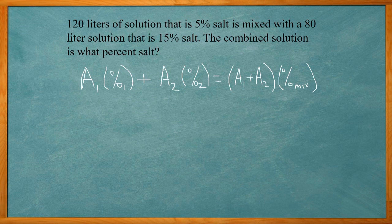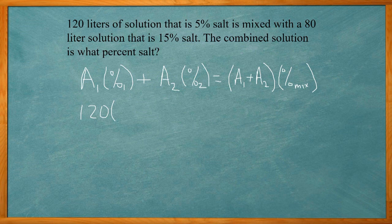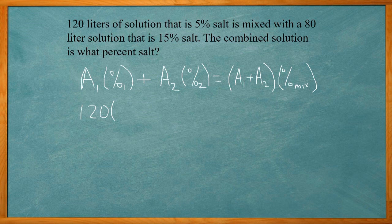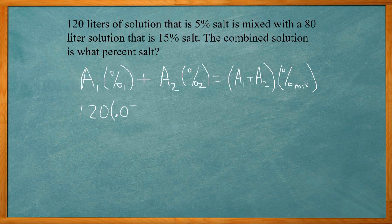So we're going to fill in what we know. We know the amount 1 is 120. The percent solution is 5%. We're going to change that to decimal. We should basically take the 5% divided by 100. That will give you 0.05. I just move the decimal place two spots.